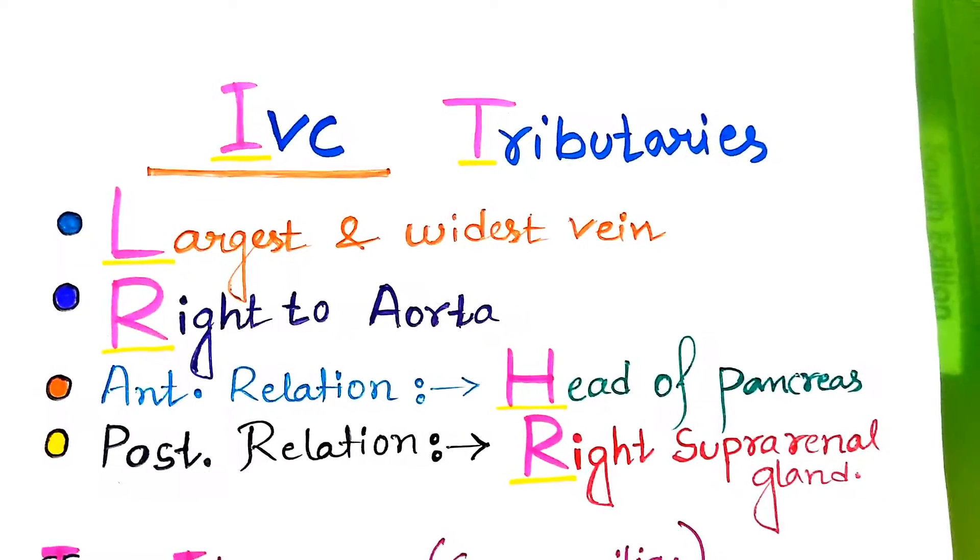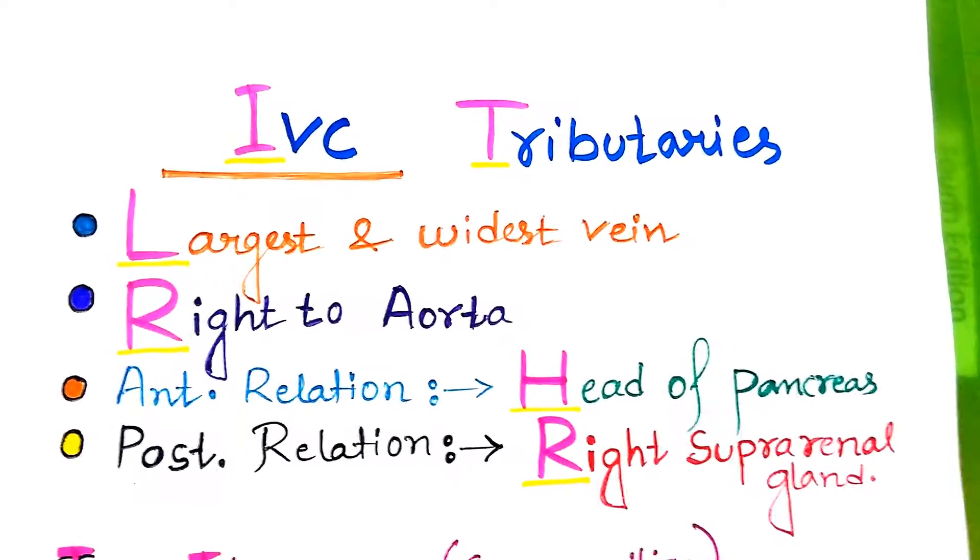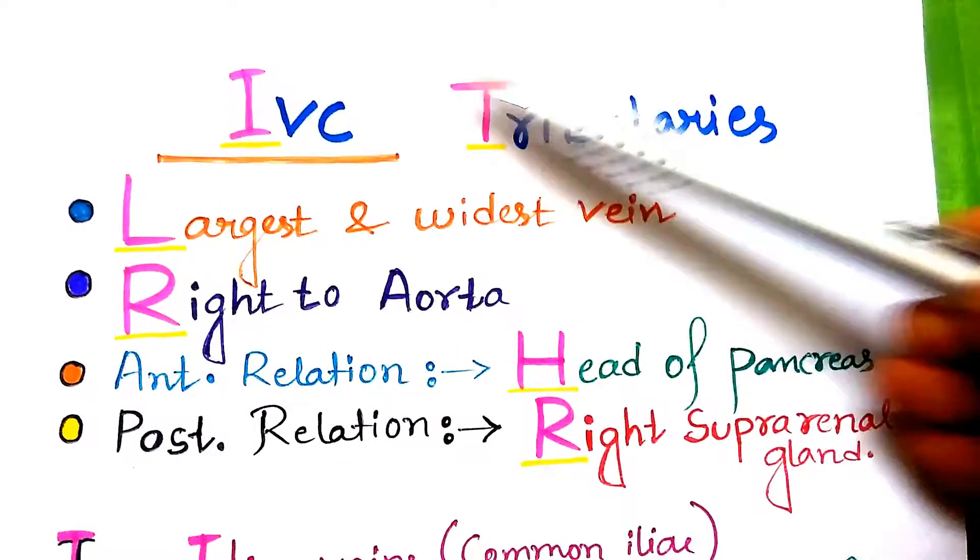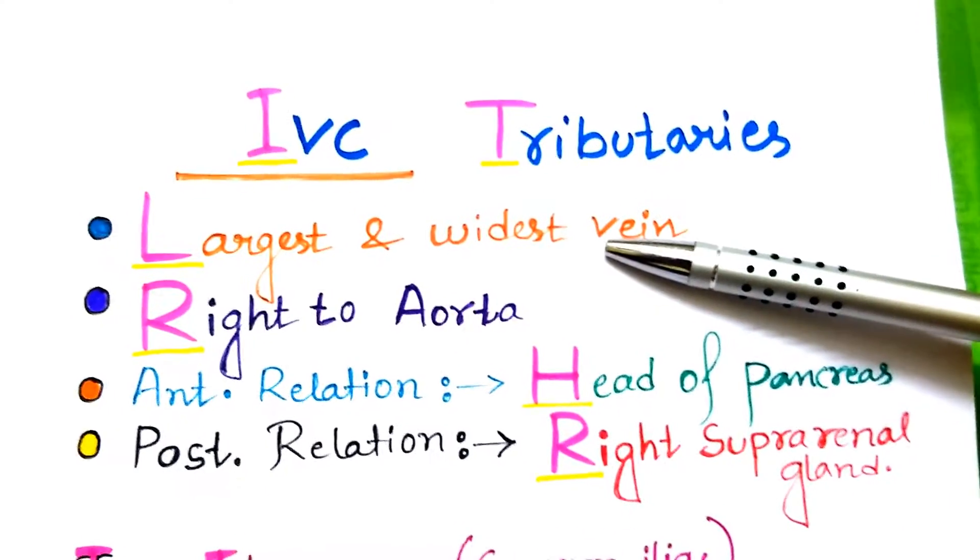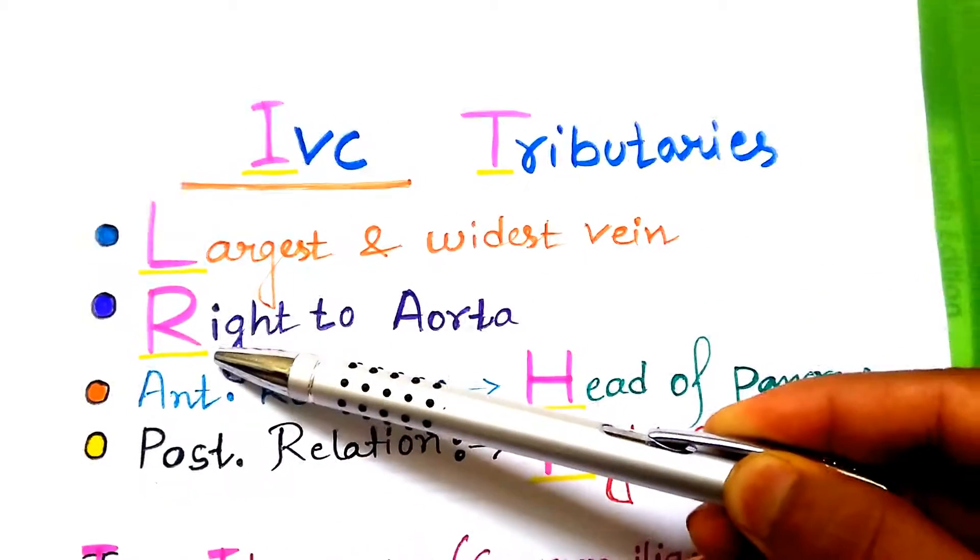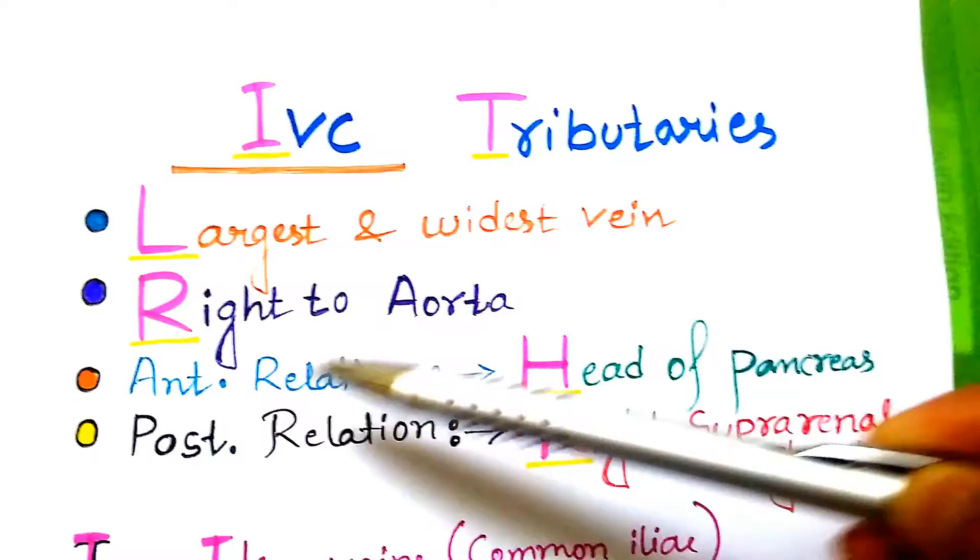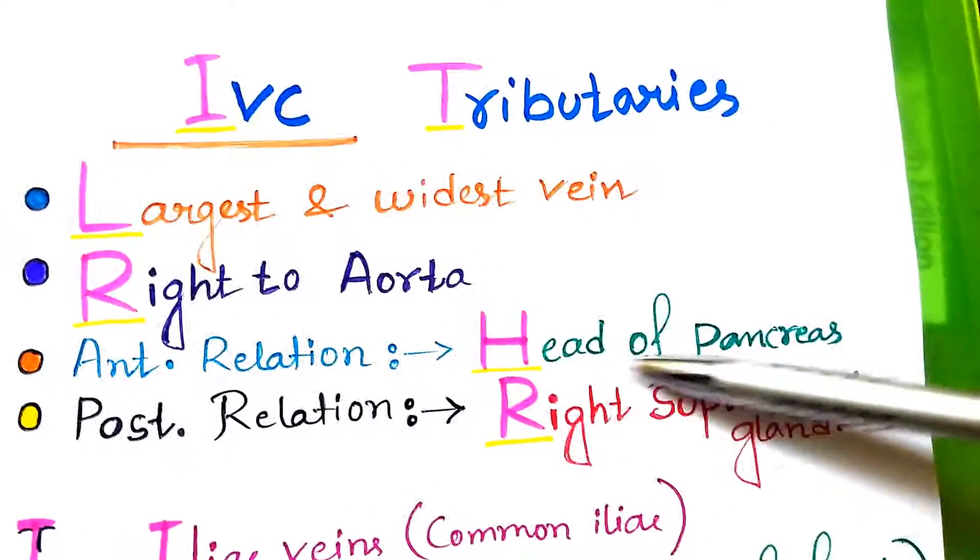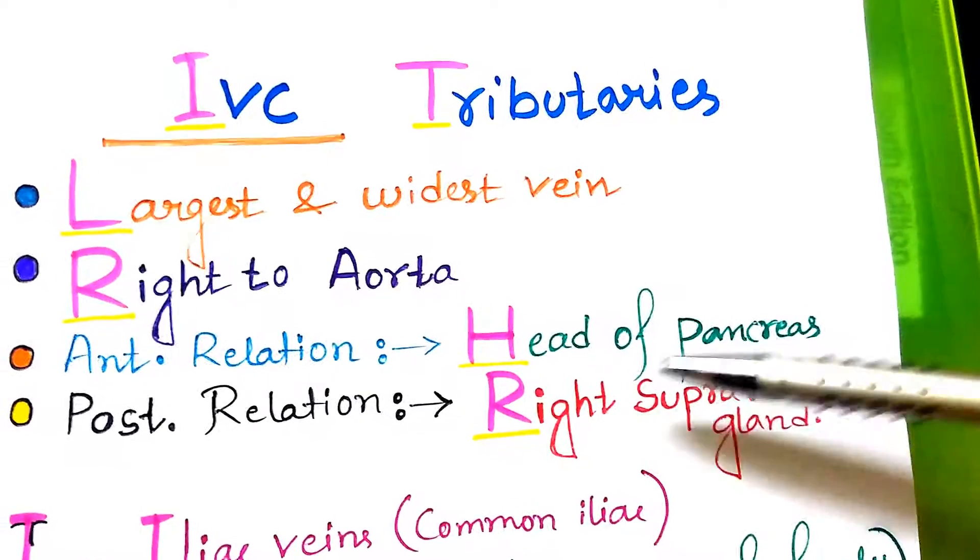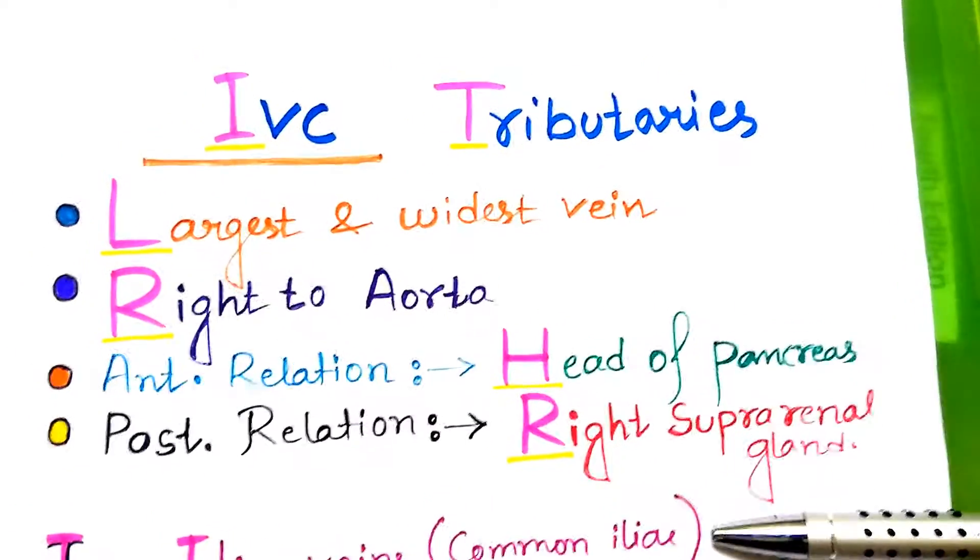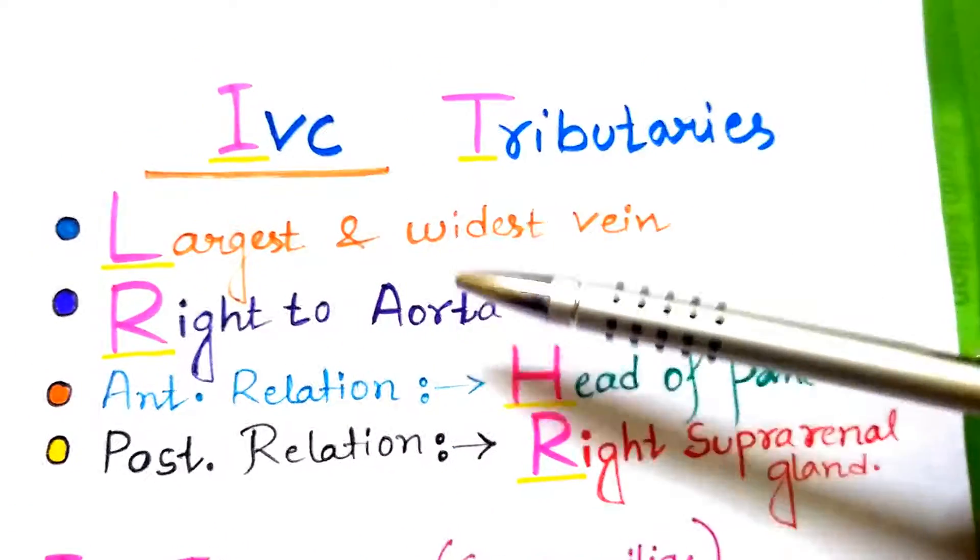The inferior vena cava is the largest and widest vein in the body. It is right to that of aorta. In anterior relation, head of pancreas lies anteriorly. In the posterior relation, the right suprarenal gland lies posteriorly.